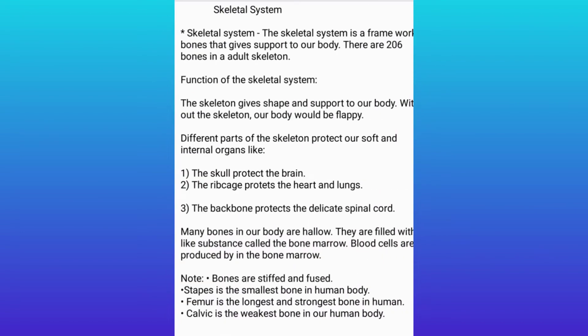The skeleton system is a framework of bones that give support to our body. There are 206 bones in an adult skeleton. The skeleton system provides shape and support to our body — without the skeleton, our body would be floppy.